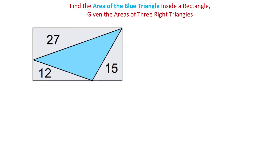In this figure we have a rectangle and we are given the areas of three right triangles. One of these right triangles has the area of 27 square units, the second one 15 square units, and the third one 12 square units. We need to find the area of this blue triangle.